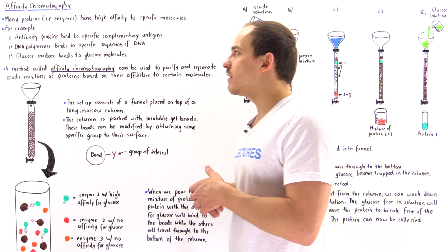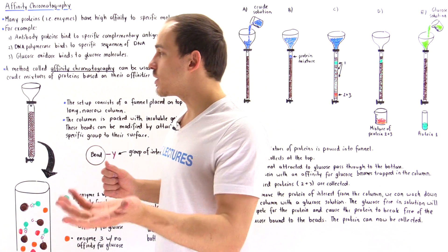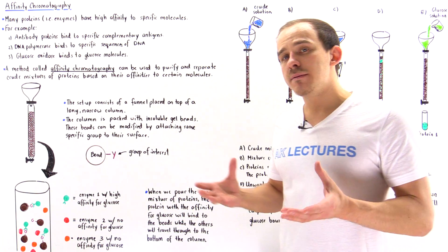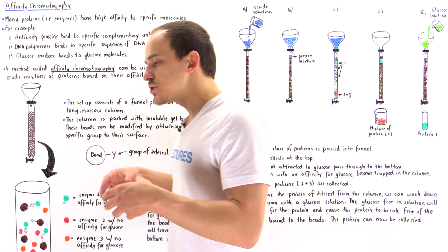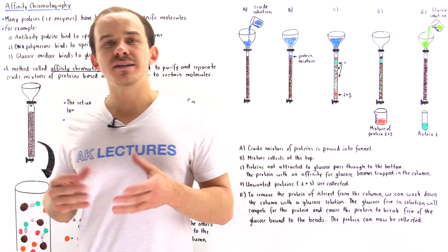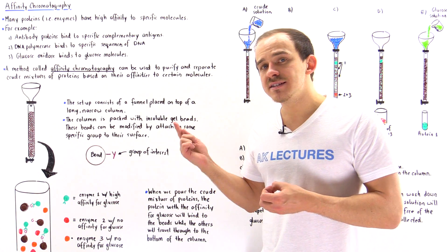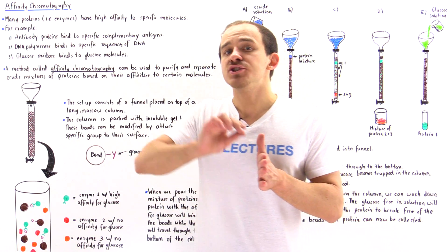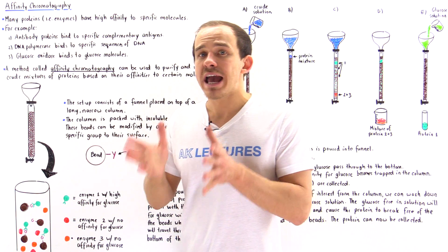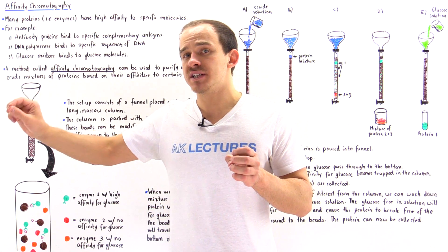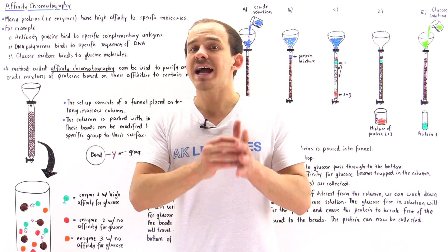Enzymes are biological catalysts, and we have many different types of enzymes in our body. For example, just in our immune system alone, we have many proteins — these protective proteins we call antibodies. Our body manufactures these antibodies so that they bind to specific types of molecules we call antigens. So for every antigen, we have a specific type of antibody that can bind to that antigen and that antigen alone.